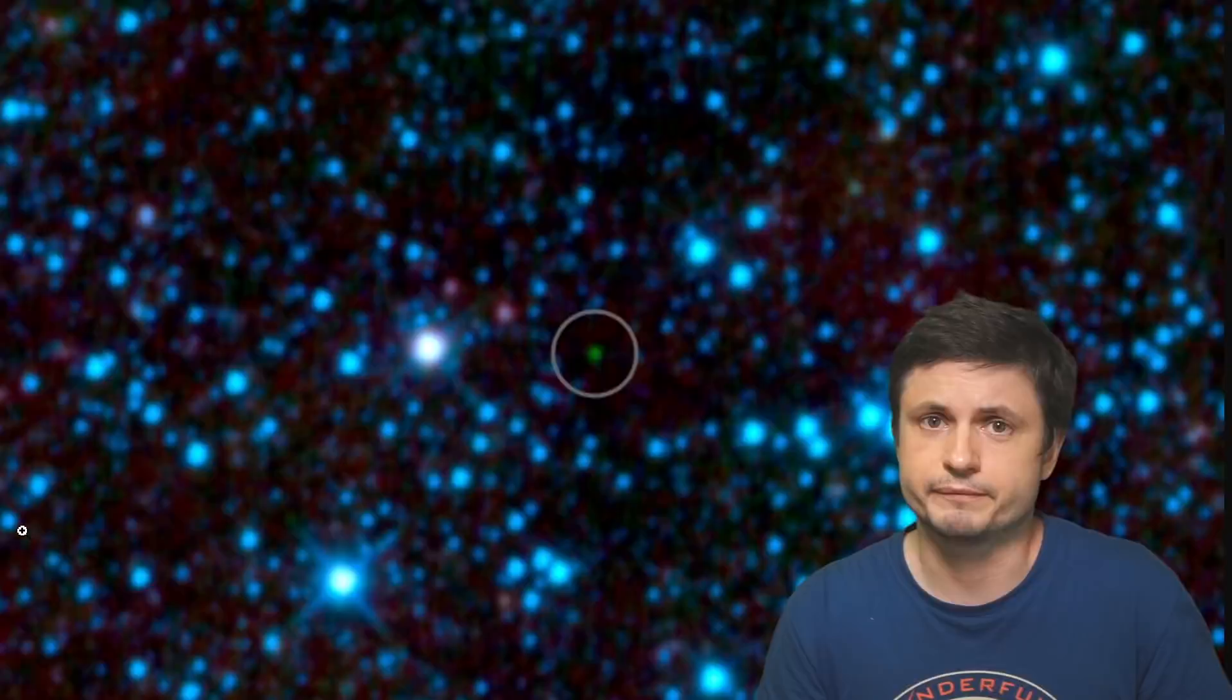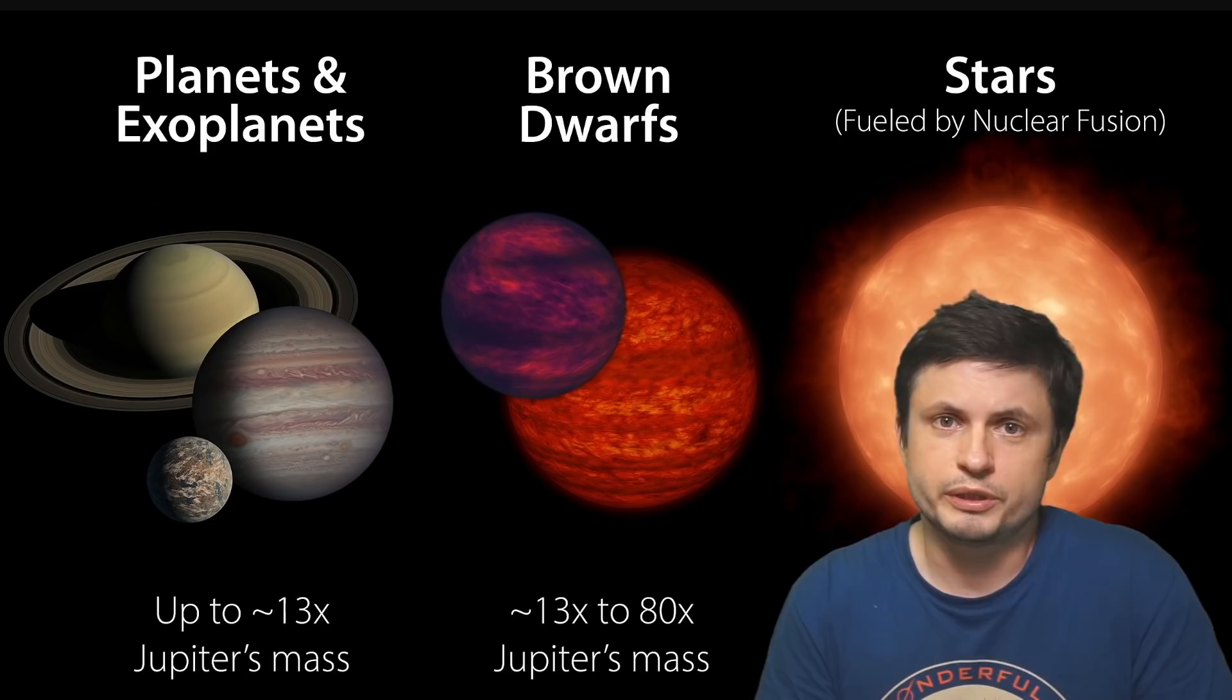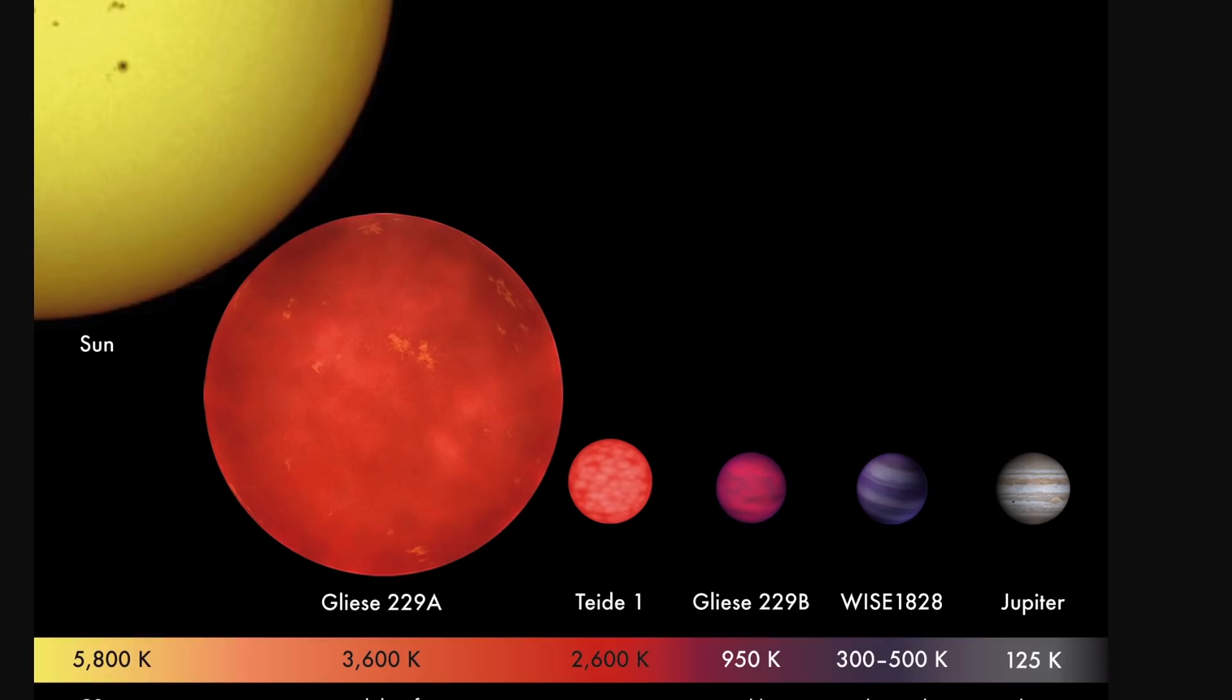But first, well, the brown dwarves themselves are already quite mysterious. Since we don't have any brown dwarves in the solar system, and since the nearest one is actually still quite far away from us, it's only in the last few years that we started to discover some of their properties and understand what actually happens inside of them.